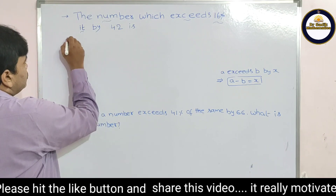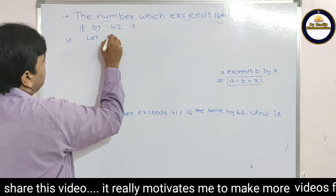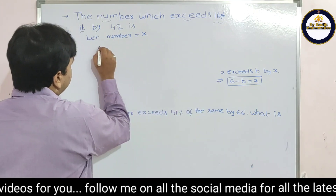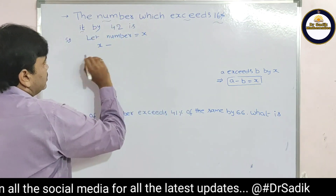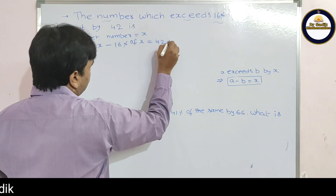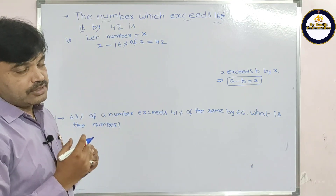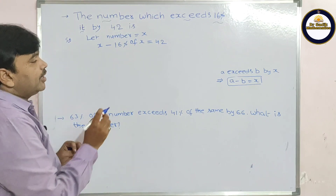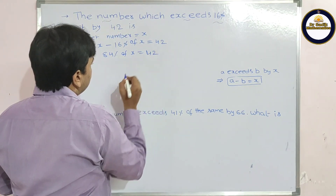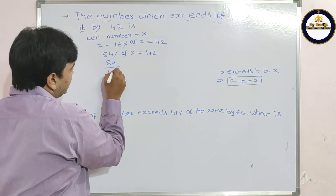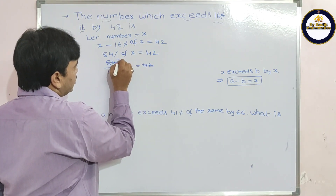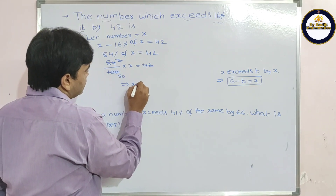Solution: let the number be x. So x minus 16% of x equals 42. Here x means 100% of x, so 100 minus 16 gives 84. Therefore 84% of x equals 42. Now, 42 divided by 84 gives 2 times, and 2 into 100 gives 50. So x equals 50.